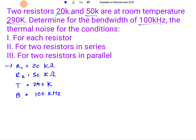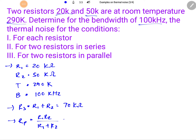R1 = 20 KΩ and R2 = 50 KΩ are given. For the series case, the total resistance R_s = R1 + R2 = 70 KΩ. For the parallel case, R_p = (R1 × R2) / (R1 + R2), which calculates to 14.28 KΩ.